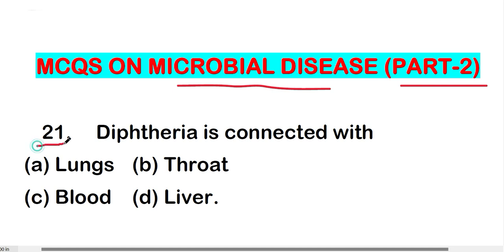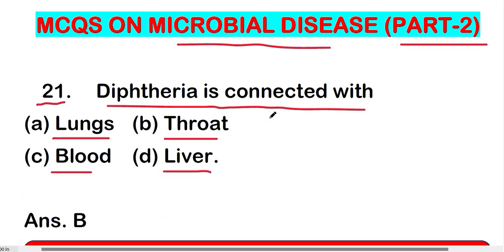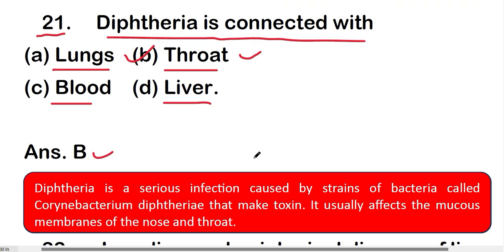Question number 21: Diphtheria is connected with which part or organ? Option A: lungs, Option B: throat, Option C: blood, or Option D: liver. The right answer is Option B, that is throat. Diphtheria is a serious infection caused by strains of bacteria called Corynebacterium diphtheriae that make toxin, and it usually affects the mucous membrane of the nose and throat.